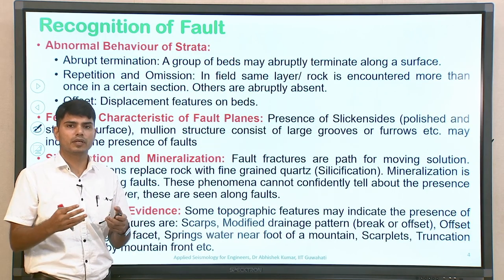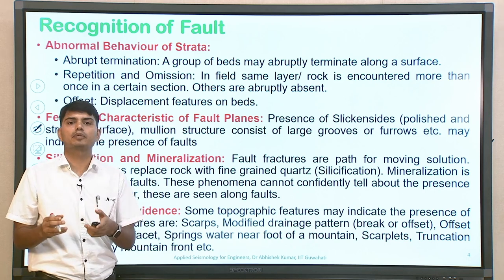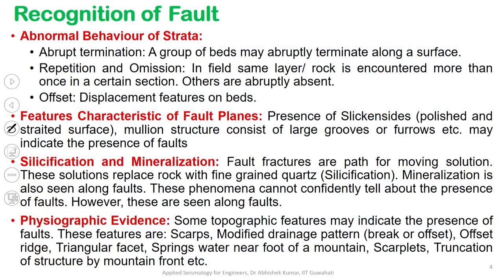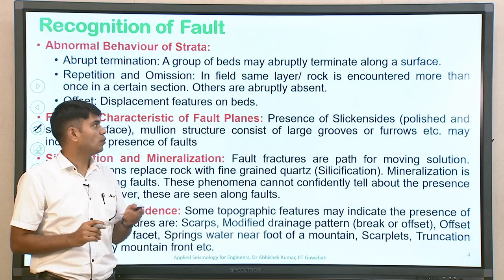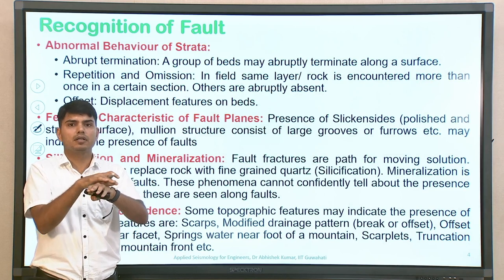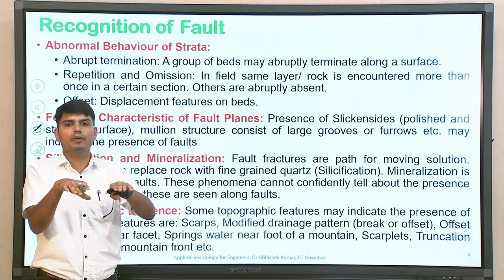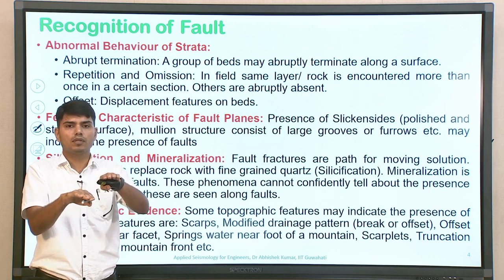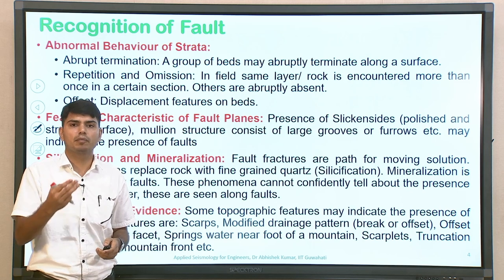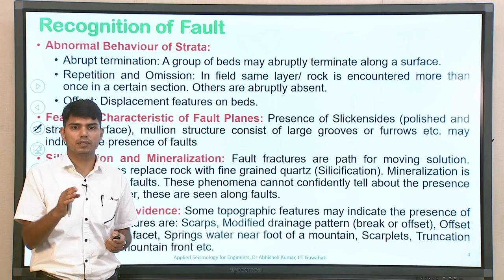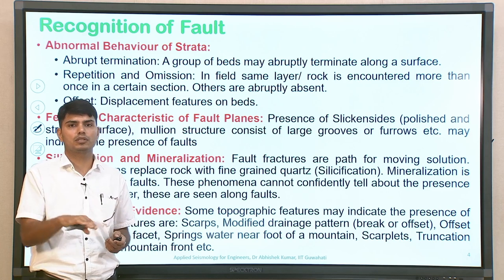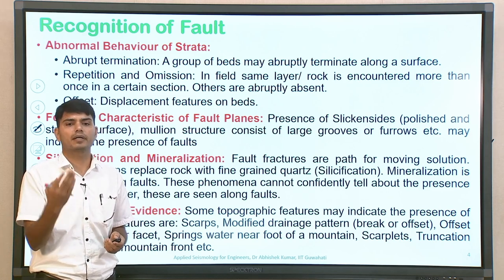There are ways to identify the presence of a fault. One is abnormal behavior of strata. Fault means some kind of possible dislocation. When this dislocation happens, there will be an abrupt termination of a group of beds — a soil stratification that might have been continuing in some geological time scale, but due to relative motion between the two sides of the fault block, there is now an abrupt termination or discontinuity in terms of layers.